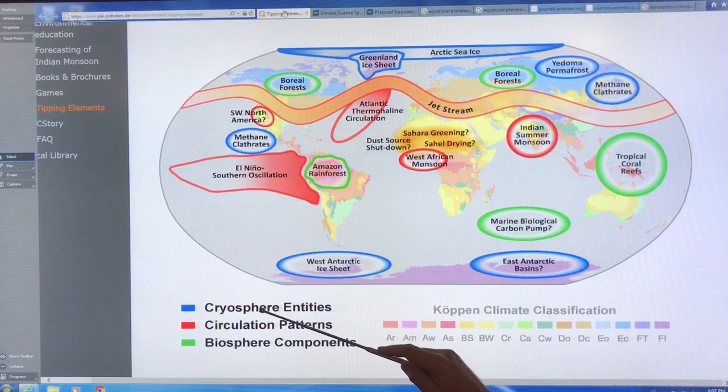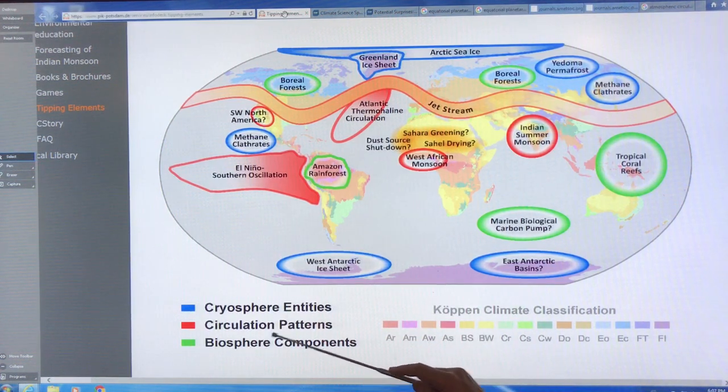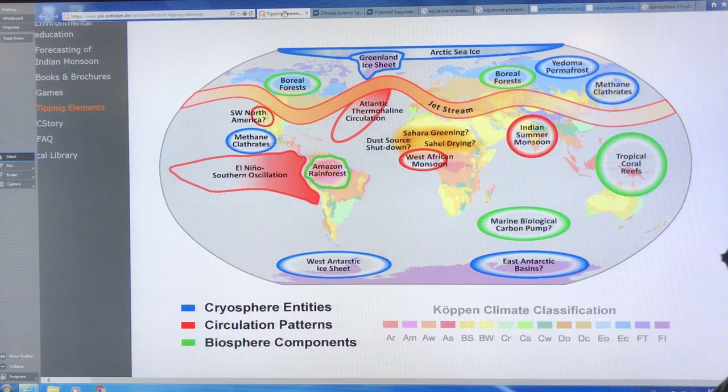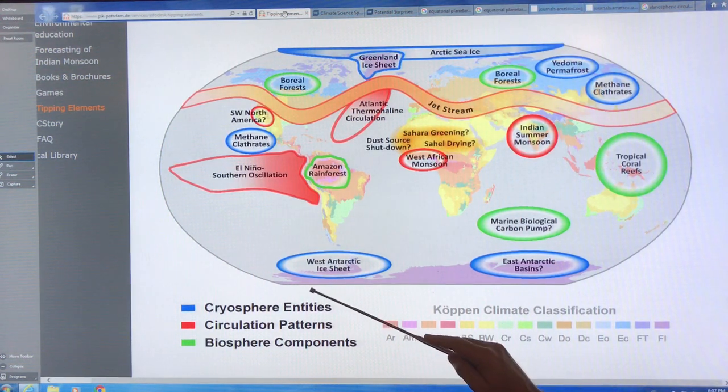Cryosphere, the circulation patterns, both ocean and atmosphere, and the biosphere component. So let's look at the ones that are most familiar to people, the cryosphere entities.